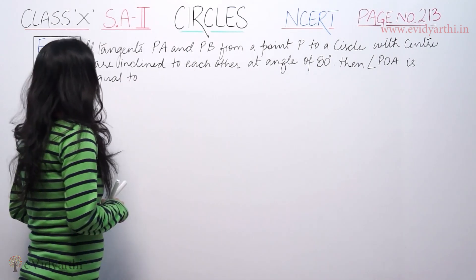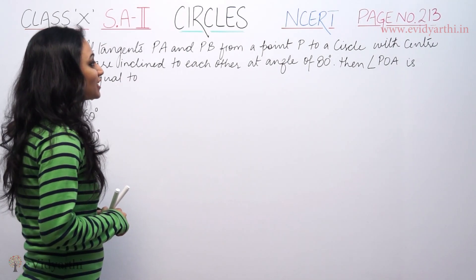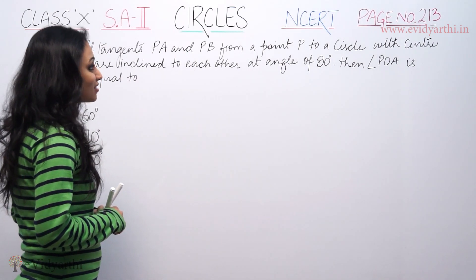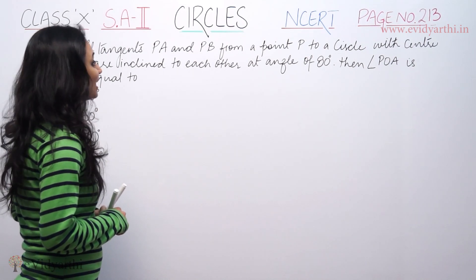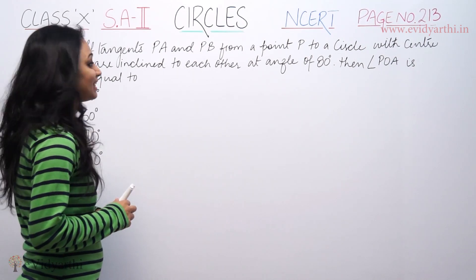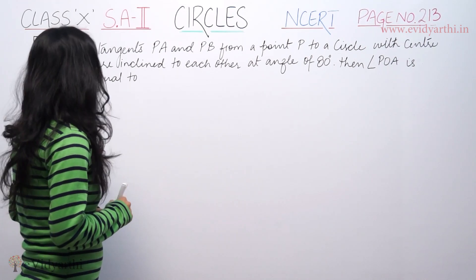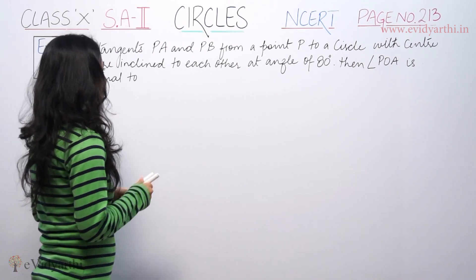The question says: if the tangents PA and PB from a point P to a circle with center O are inclined to each other at an angle of 80 degrees, then angle POA is equal to?